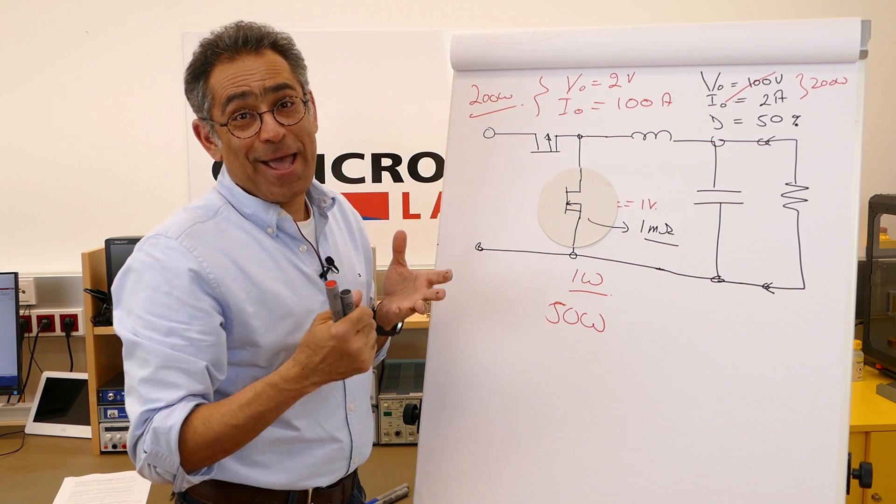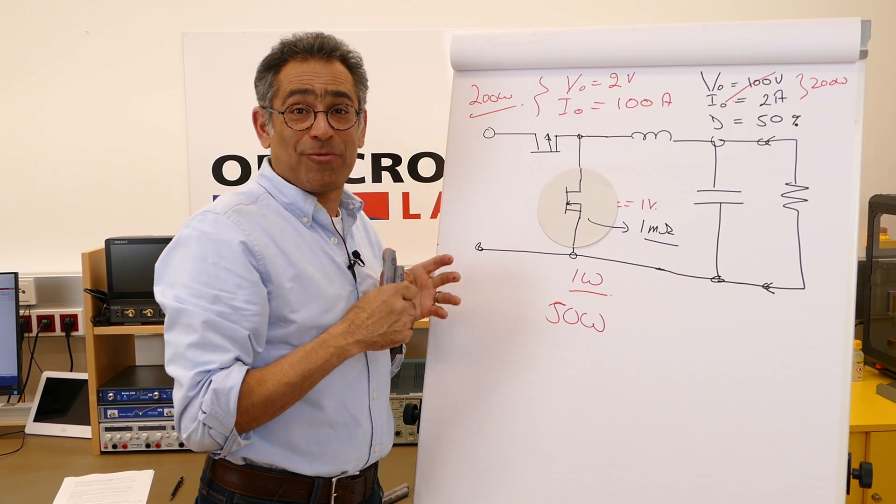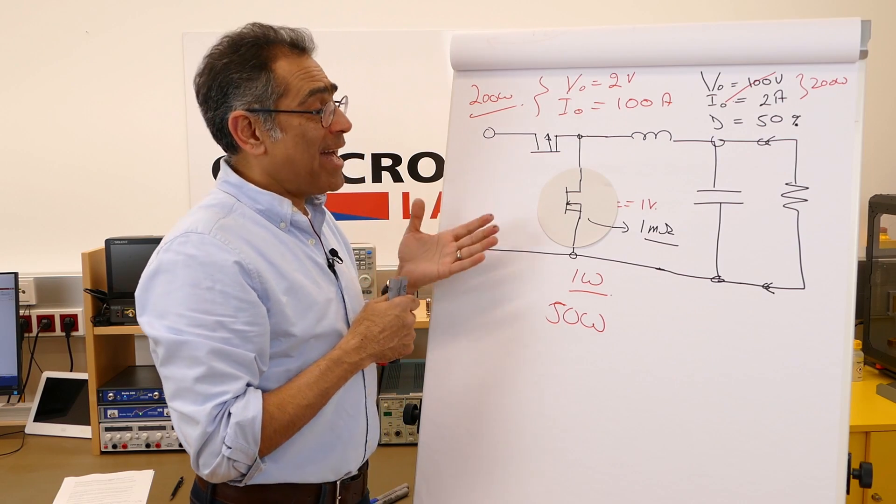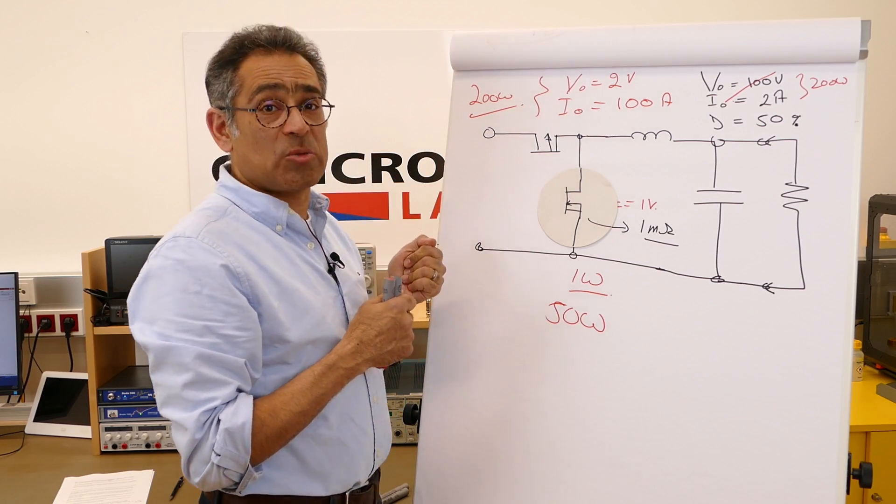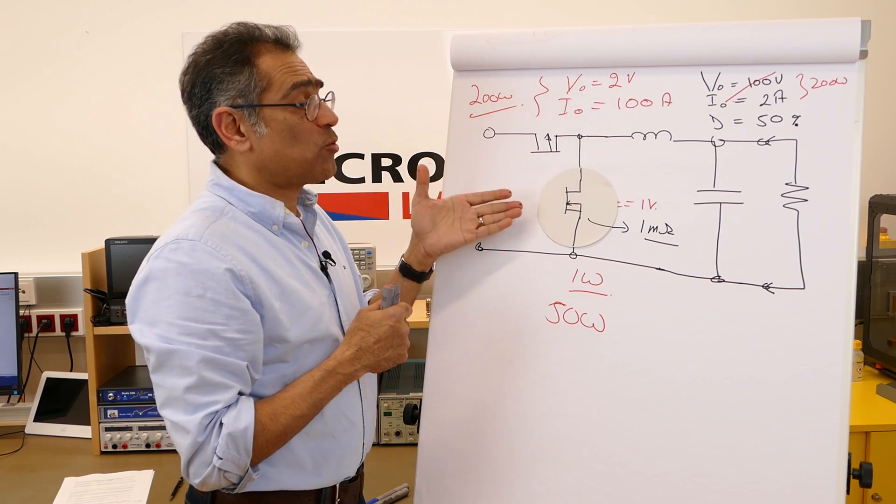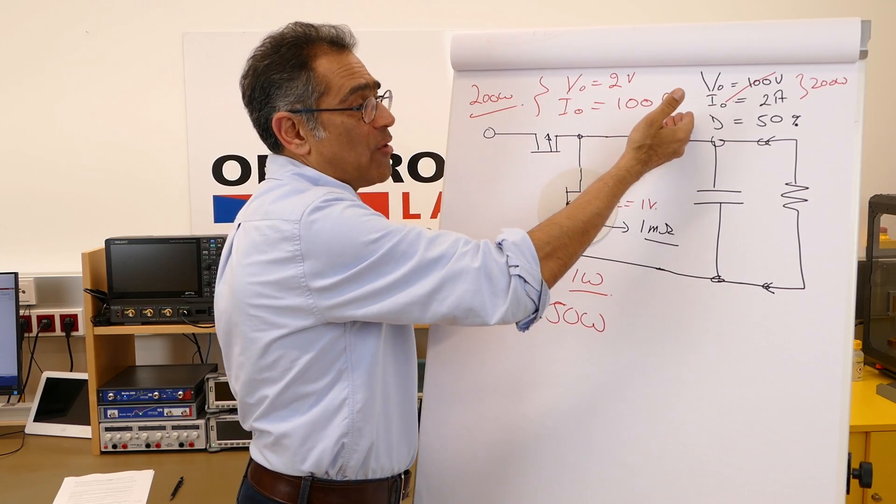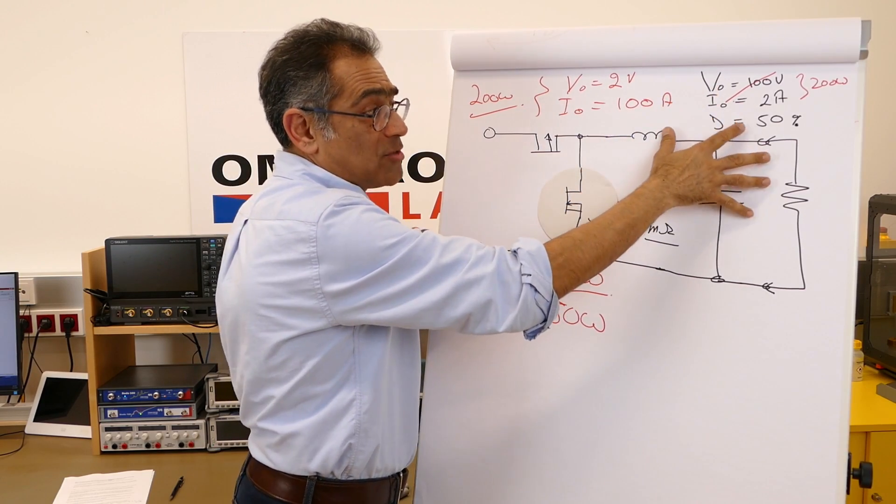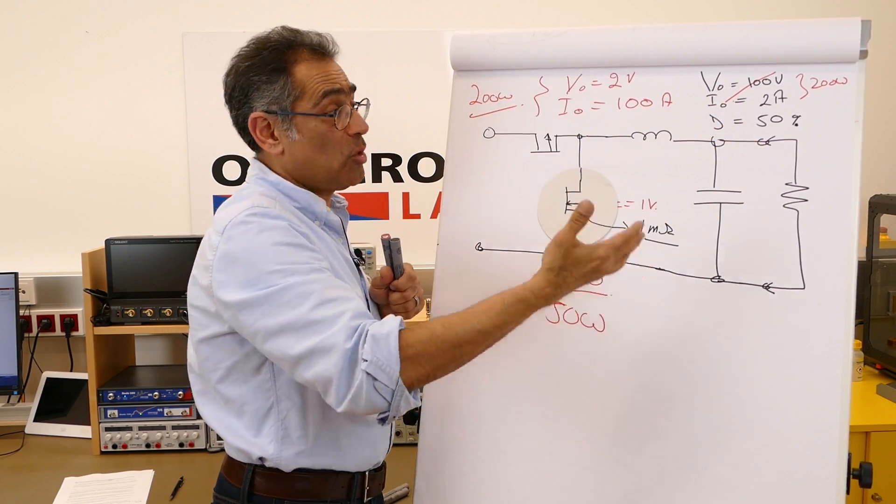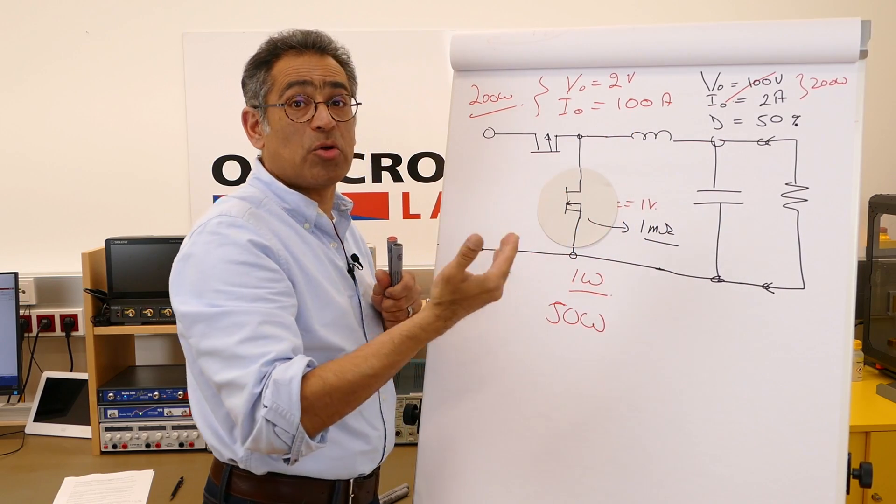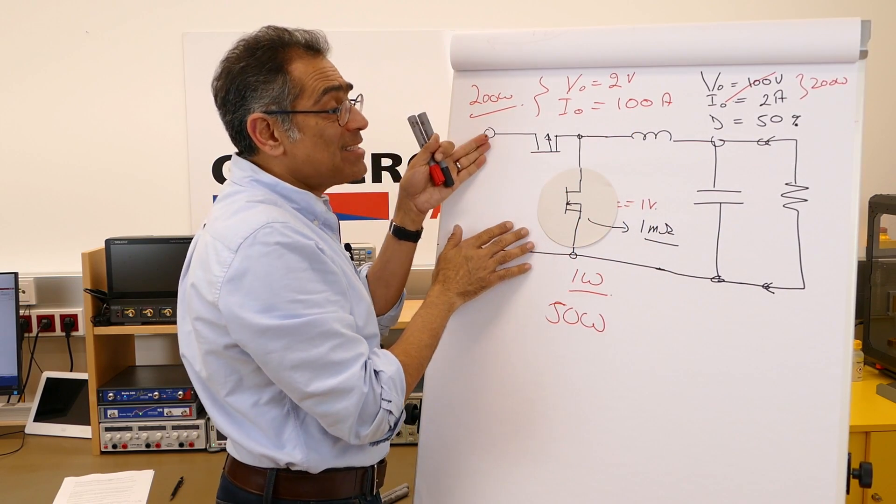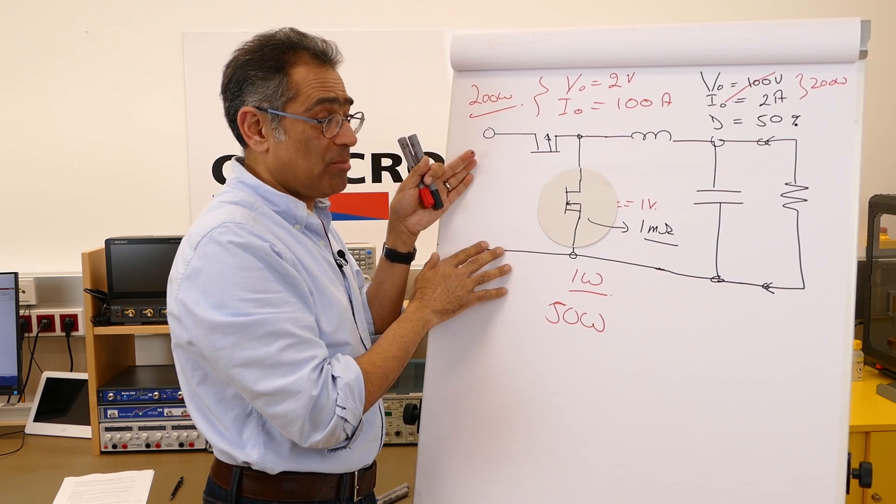However, as everything else with engineering every time you get a few advantages you get a couple of headaches and of course there is a catch with this one also. The issue is when we go into discontinuous conduction mode. So when the current of this power supply, the output current, falls to a point whereby the inductor current goes to zero, that is when this method actually becomes extremely inefficient.